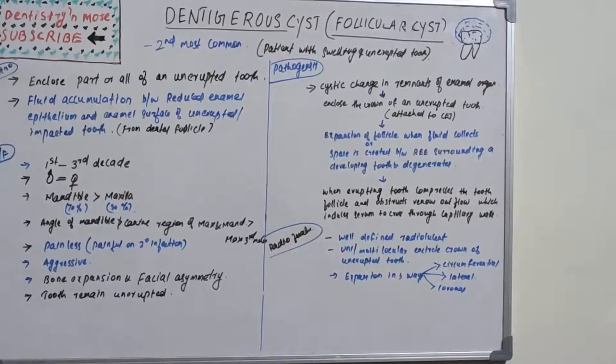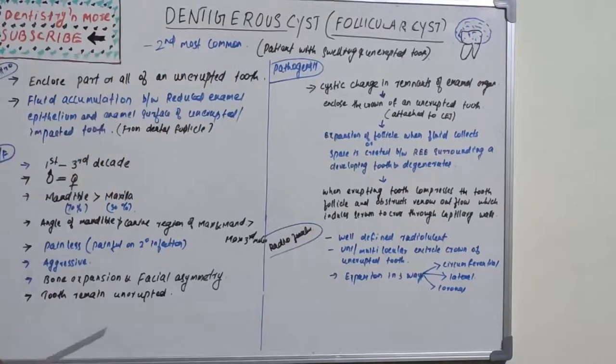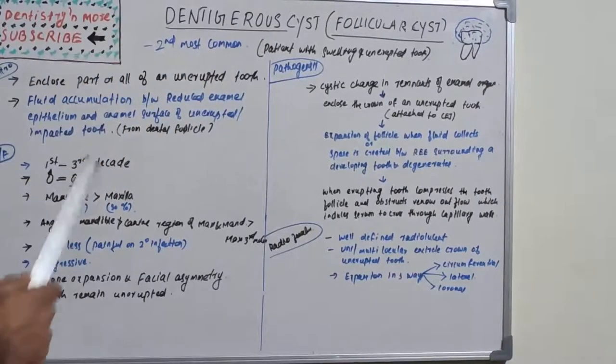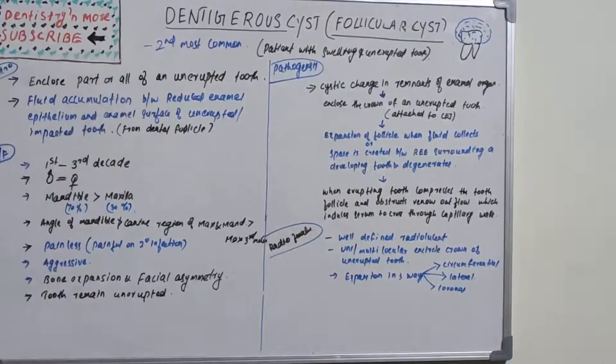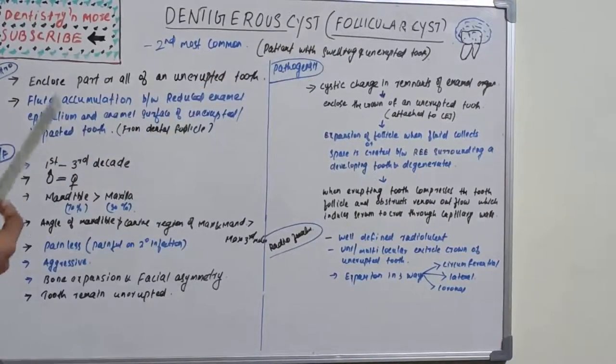Some malformation or improper reaction happens with the reduced enamel epithelium, creating a cyst which is the second most common cyst after radicular or periapical cyst. It is also known as follicular cyst because it creates follicles above the tooth crown.